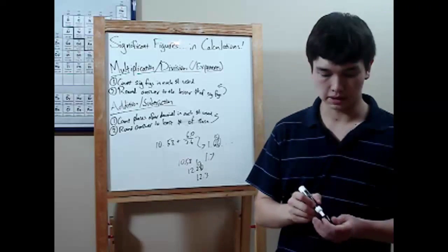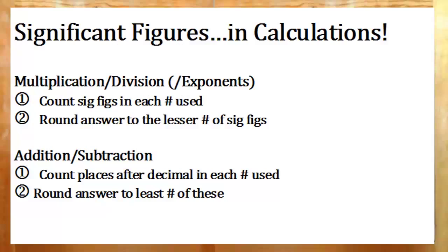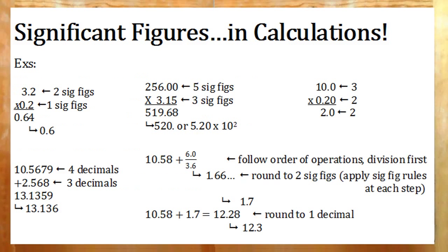To recap, significant figures, always use them in calculations. With multiplication and division, count the number of significant figures in each number you're multiplying or dividing by, and round your answer to the lesser of those two, or three, or even four. Addition or subtraction, count the number of places after the decimal in each number you're adding or subtracting, then round your answer to the least of those.